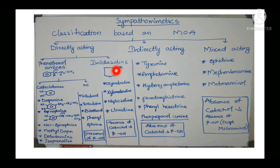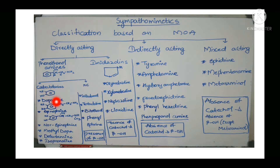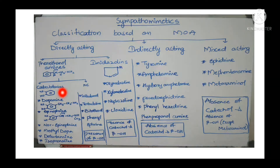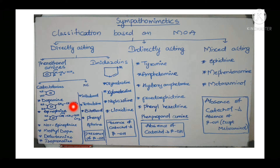Imidazolines contain a 1,3-nitrogen 5-membered ring. Phenethanolamines are further divided into catecholamines and non-catecholamines. Catecholamines contain a catechol ring; non-catecholamines do not. Examples of catecholamines are dopamine, epinephrine, norepinephrine, methyldopa, dobutamine, and isoprenaline — all having a catechol ring.